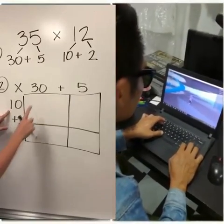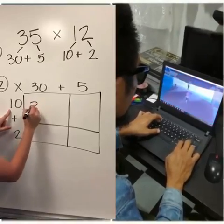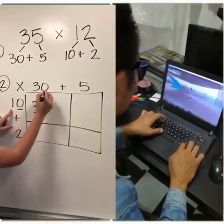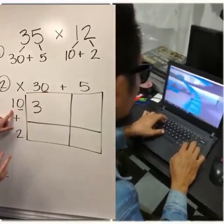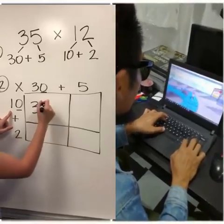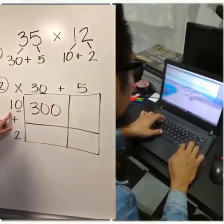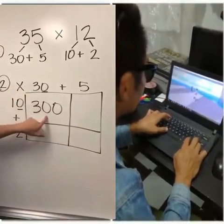So I like to say 1 times 3 is 3 and how many zeros do we have? We've got 2 so we attach them to the end of the number. So 10 times 30 is 300.